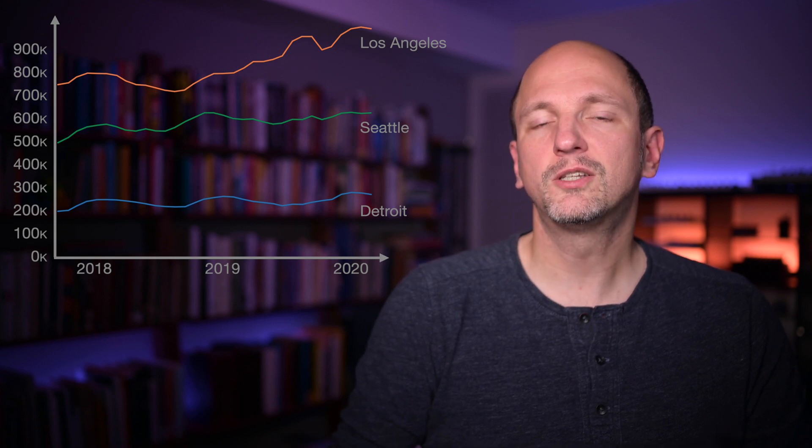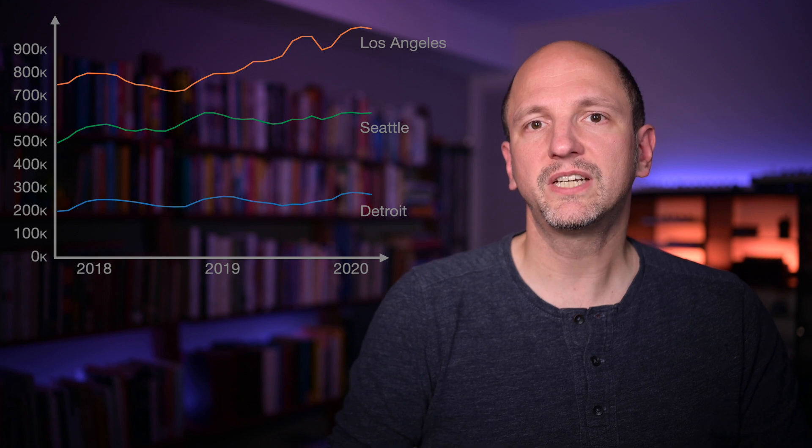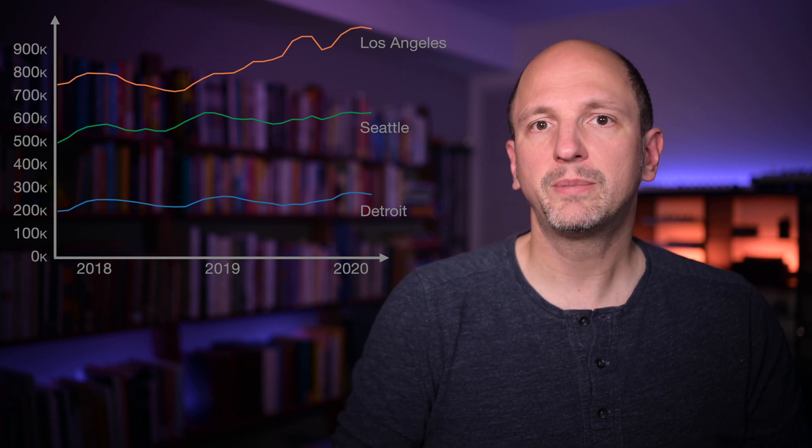So let's index this data to the beginning of 2018. That means we divide the number for each city for each month by that city's value at the beginning of its line. So the number we divide by is different between Detroit, Seattle, and LA, but it's the same along the line for each city. All three lines now start at the value of 1 on the left, and we see the change as a fraction of the price going up or down. To make the numbers nicer, we'll multiply them by 100, so we get percent instead of fractions, but it makes no difference to the actual chart.